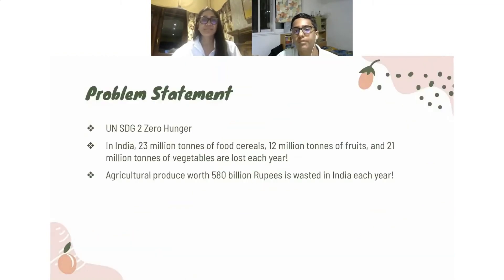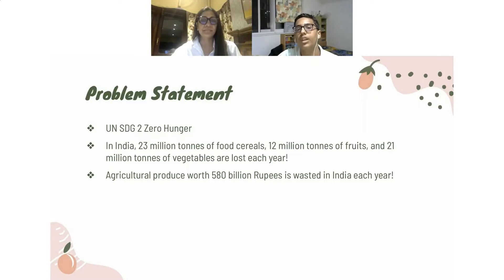Our project focuses on solving the United Nations Sustainable Development Goal 2 of Zero Hunger. In India, 23 million tons of food cereals, 12 million tons of fruits, and 21 million tons of vegetables are lost each year, with a total estimated value of 240 billion rupees. A recent estimate by the Ministry of Food Processing is that agricultural produce worth 580 billion rupees is wasted in India each year. Due to lack of knowledge about whether they can donate food and where donation centers are, people end up throwing their leftover food.